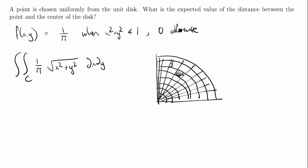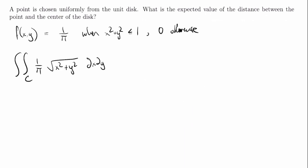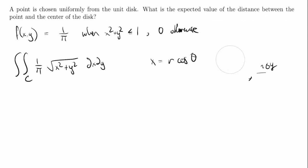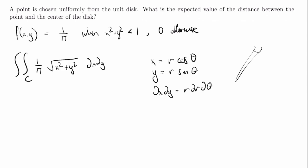Transforming into polar coordinates, there are two rules you should know. Any x gets replaced by r·cos(θ): thinking about a circle, this is cos(θ), this is sin(θ), and r is the radius, so r·cos(θ) gives x. Similarly, y is replaced by r·sin(θ). Also, dx dy is replaced by r dr dθ — there's an extra r factor. There's actually an explanation for this involving how you calculate the areas of these wedge-shaped regions, but we're not going to go into that right now.